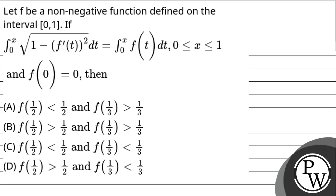Hello, let us see the question. The question says that let f be a non-negative function defined on the interval 0 to 1. If integral from 0 to x of √(1 − (f'(t))²) dt equals integral from 0 to x of f(t) dt, where x is from 0 to 1, and f(0) = 0, then — these are the given options.